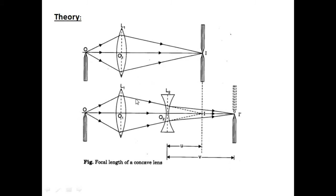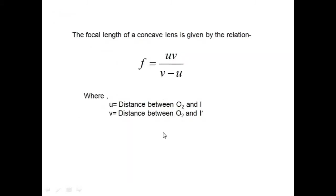So this is all about the ray diagram. The focal length of a concave lens is given by the relation f = uv / (V − u), where u is the distance between O2 and I, and V is the distance between O2 and I dash. Now let's go to the experiment.